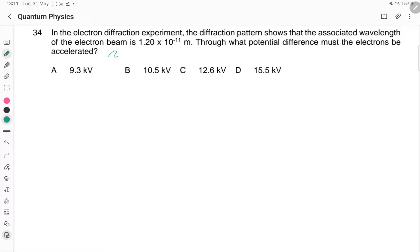For this question, we see that the de Broglie wavelength of the electron beam is given as such. We're supposed to find what the potential difference is. So let's link the things up.